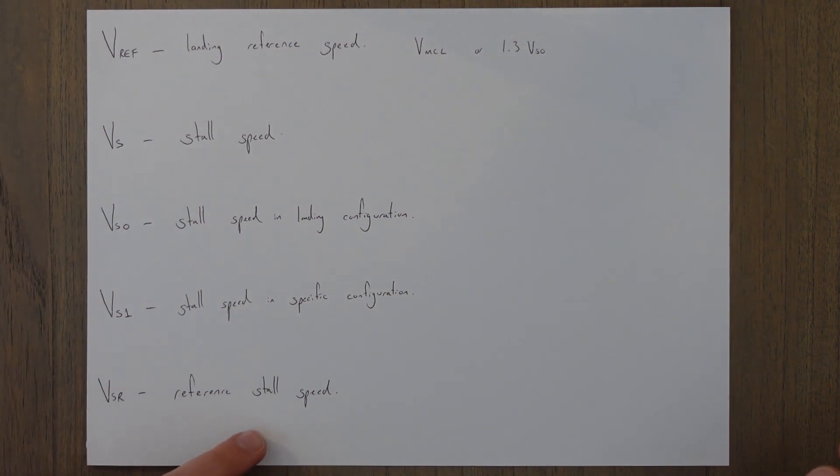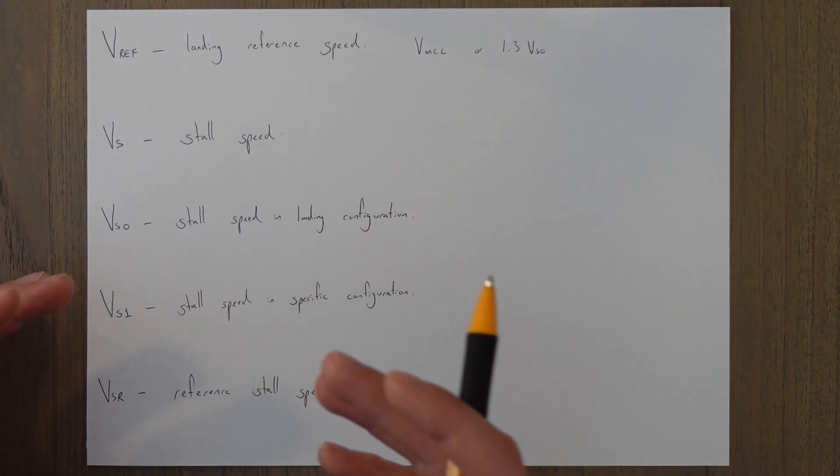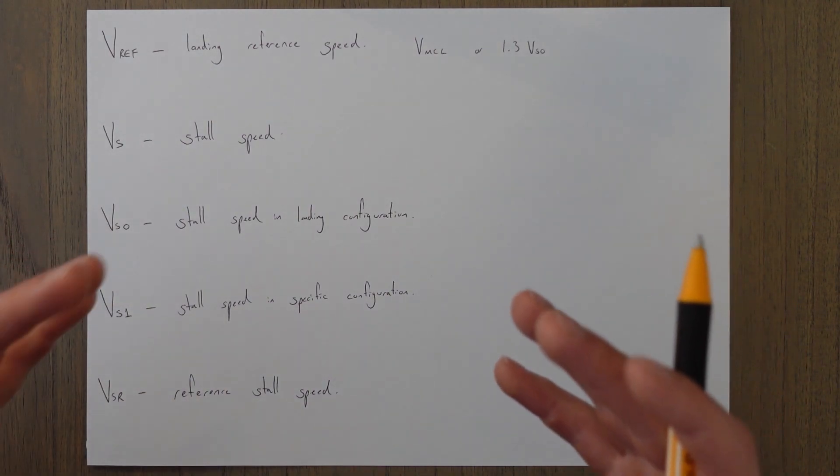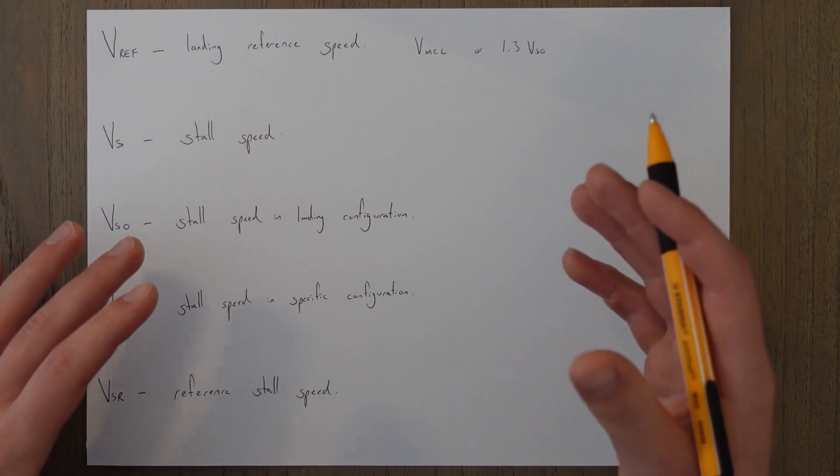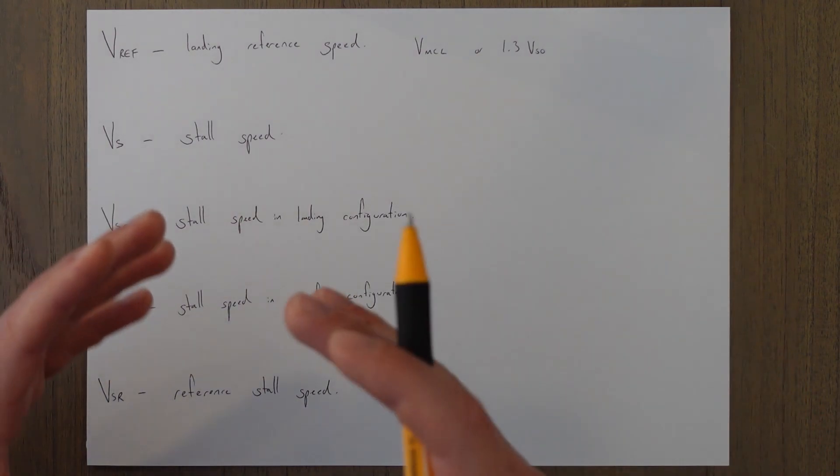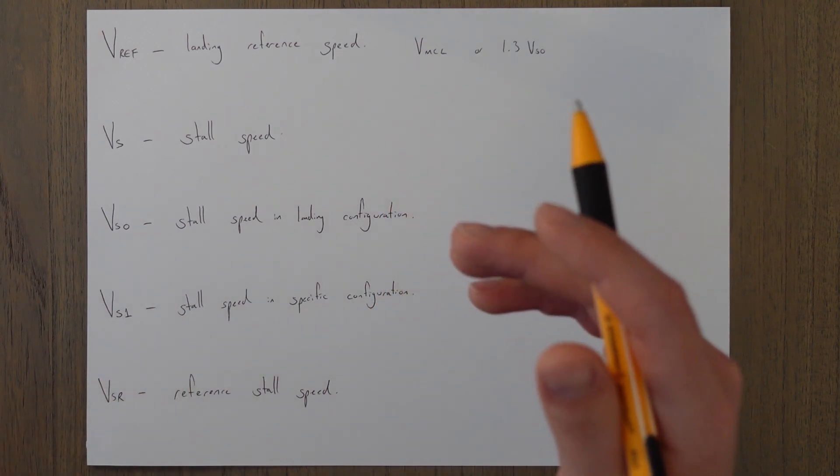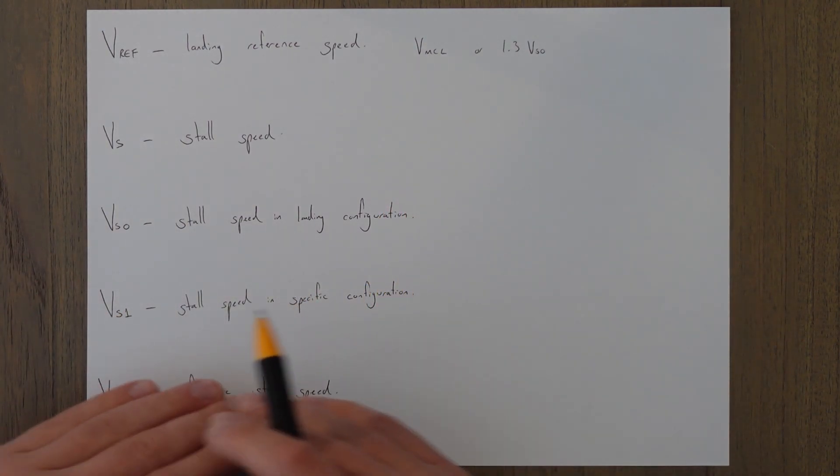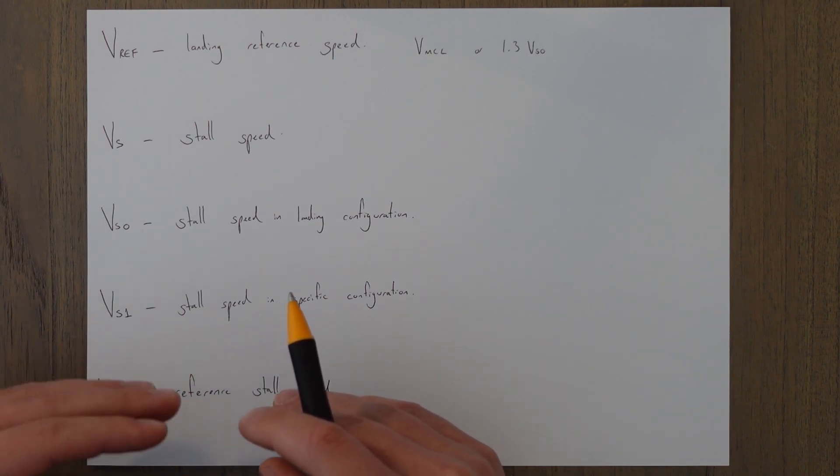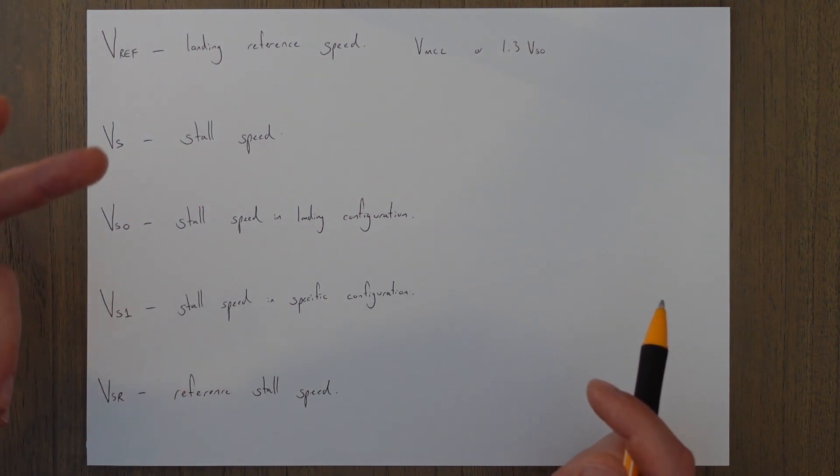VSR is the reference stall speed. This is basically a stall speed that is being physically tested by the aircraft manufacturers under very specific conditions and weight. It's not really used that often but you do see it sometimes and quite often other speeds are derived from these reference stall speeds. That would be like the absolute minimum and then the stall speed we use operationally might have a little bit of a buffer or a margin on it to keep us away from the absolute minimum.